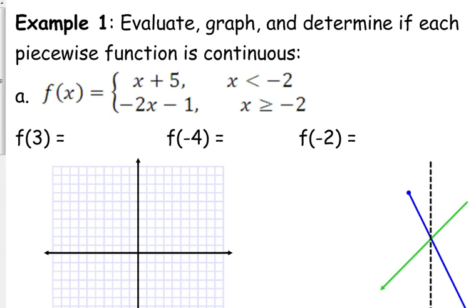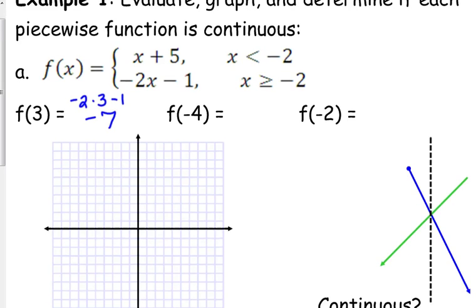Since 3 is greater than negative 2, we only plug it into the second function. Plugging into negative 2x minus 1, that is negative 6 minus 1, so the answer is negative 7. Since we're trying to graph this and just got a point on this function, I'm going to go ahead and plot that point. So positive 3, negative 7 — I'll go ahead and plot that point.